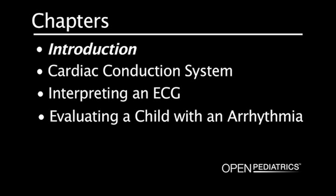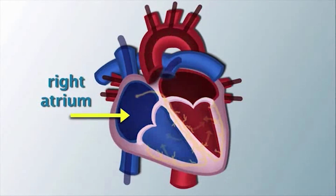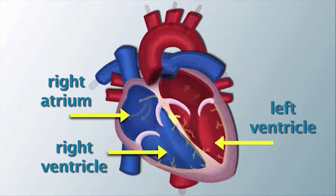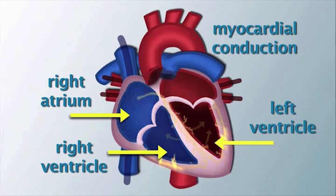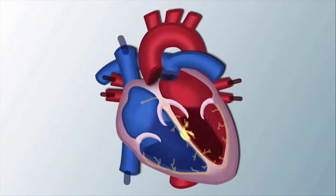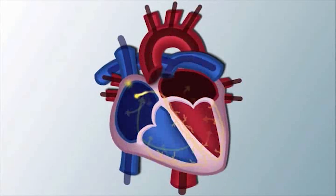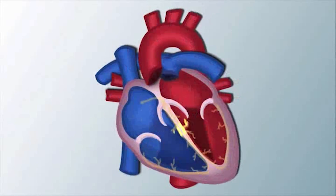In order for the heart muscle to contract and beat, it needs an electrical stimulus. This stimulus follows a pathway, beginning in the right atrium and traveling down to the ventricles. This is known as myocardial conduction. Myocardial conduction causes the heart to contract. When there is an arrhythmia or change in the normal electrocardiogram, there is a disturbance in this pathway and the heart does not contract or beat efficiently. To understand cardiac arrhythmias, it is necessary to learn the normal pathway in conduction of the impulse.